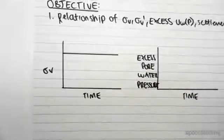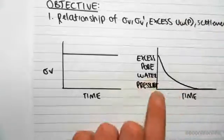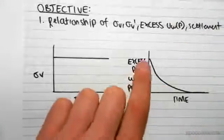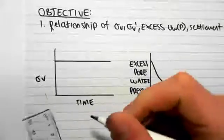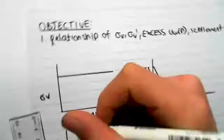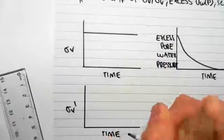So if we were to graph this diagram, it would look something like this. So as time goes on, the water escapes and the excess pore water pressure reduces. The next graph we can draw is the effective stress against time.